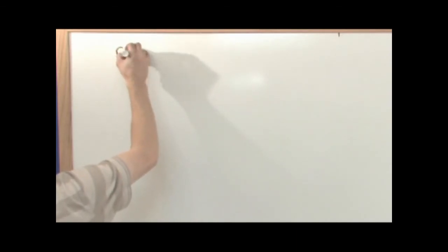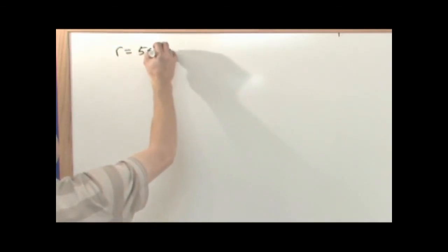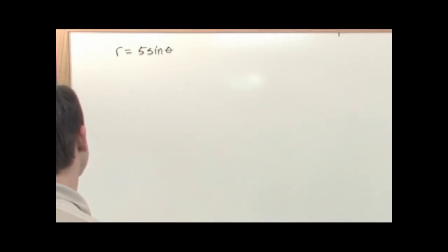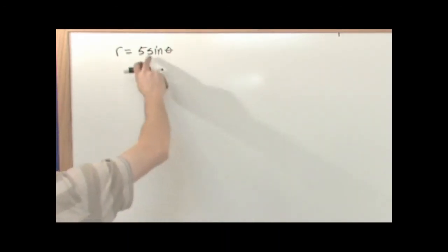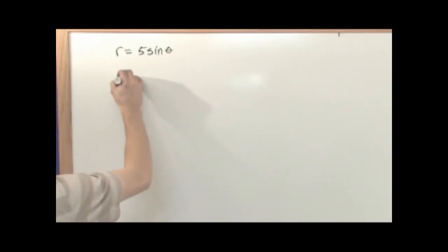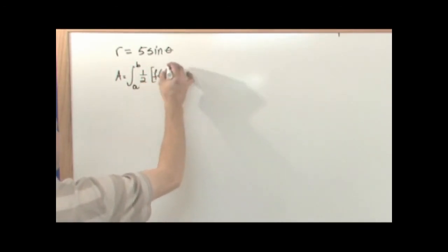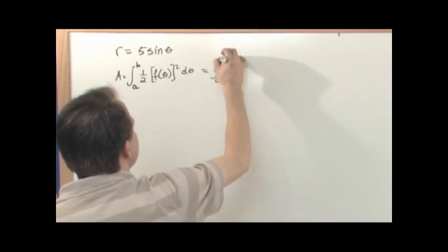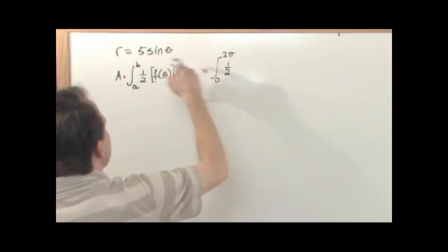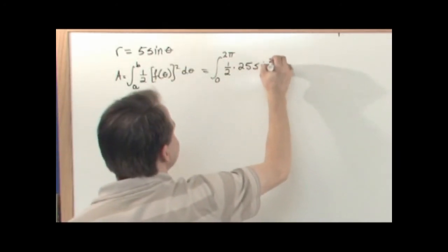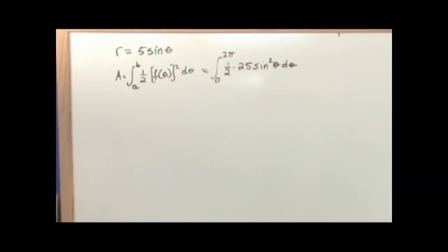Now the next one we're going to do is r = 5sin(θ), and I want to find the area enclosed by that. The problem says find the area enclosed by this function — usually that means you integrate all the way around 2π to see what area this function actually encloses. So the area equals the integral from 0 to 2π of one-half times (5sin θ)² d theta. 5 squared is 25, so it's the integral from 0 to 2π of one-half times 25 sin²θ d theta.